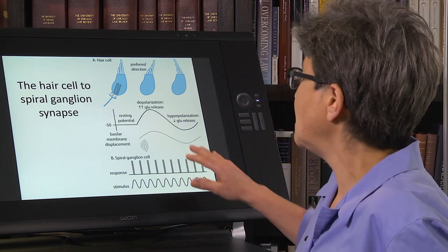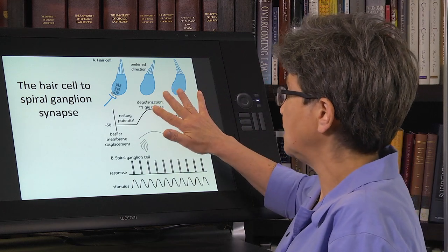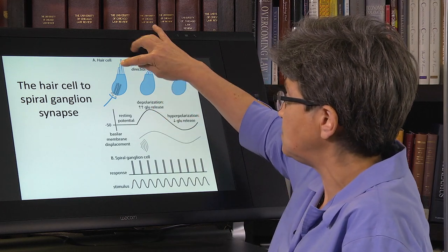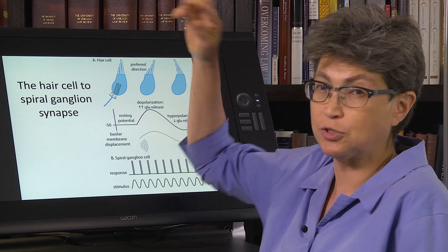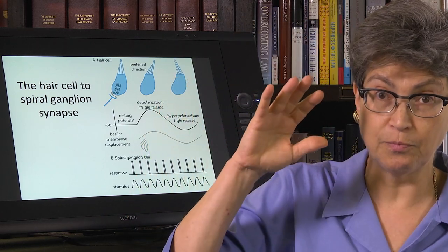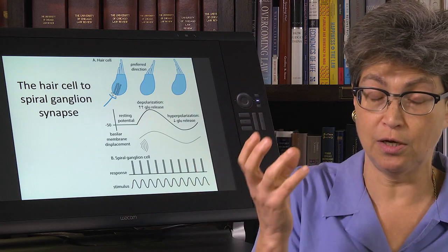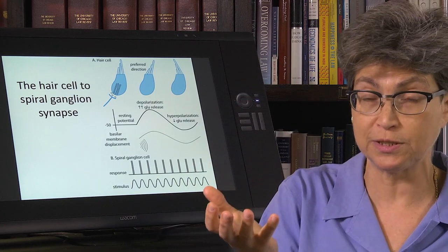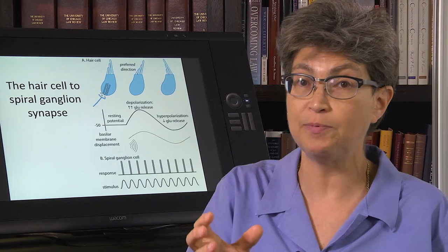But suffice it to say, this is a very fast mechanism, because these MET channels are ionotropic. There's this huge driving force in from the endocochlear potential of the endolymph, which is around plus 80 millivolts, and the high potassium.